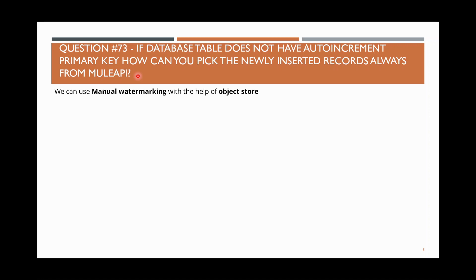But if there is no such field in the table, we need to use a field like 'last modified datetime' and do manual watermarking. If I'm not using 'On Table Row' but instead using a scheduler to pick up records, I do manual watermarking using the Object Store. I store the latest processed record information in the Object Store, and on the next run I refer to that cached value to pick only the remaining records.